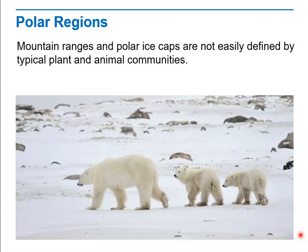There's one more terrestrial biome, but it's not really a biome — the polar regions don't really fit into a major biome. I'm just going to mention them before we move into aquatic ecosystems. They're not easily defined in terms of typical plant and animal communities. Polar regions include the polar ice caps, but they also include the very high elevations of mountain ranges.